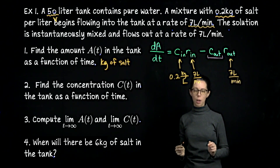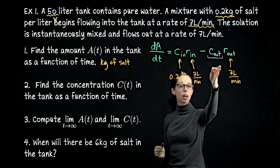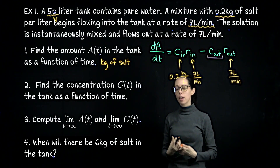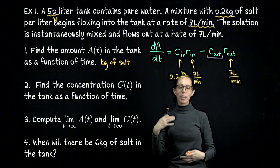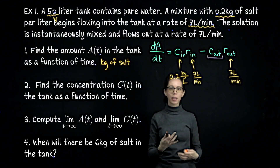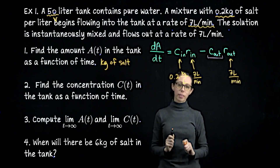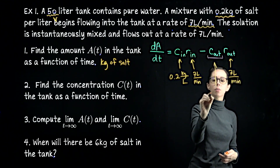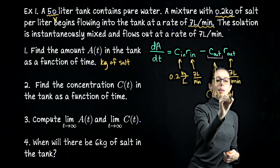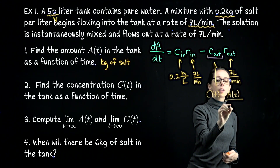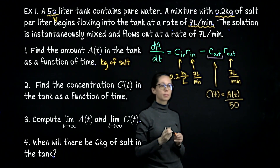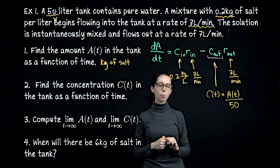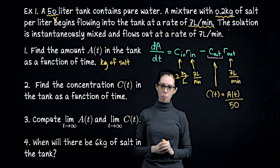The concentration out equals the concentration in the tank: A(t) divided by 50. Here we're increasing the salinity, so we expect the concentration to go up over time. Those are the four terms we'll need to set up the differential equation for the amount of salt in the tank.